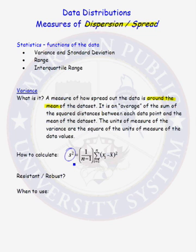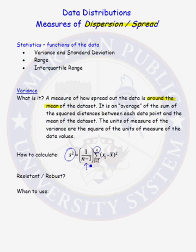We use s² to designate sample variance. Here is why we have "average" in quotes: we are summing n different numbers, but we are ultimately dividing by n minus 1. So it is not a true average — if it were, we would divide by n. To get the sample variance, we take every data point from data point 1 up to the nth data point, subtract the mean of the data set, square that quantity, add all n of those numbers together, and then divide by n minus 1.